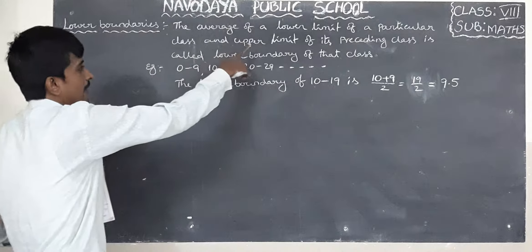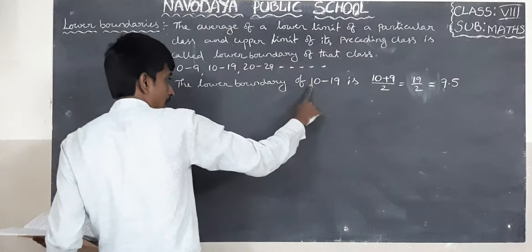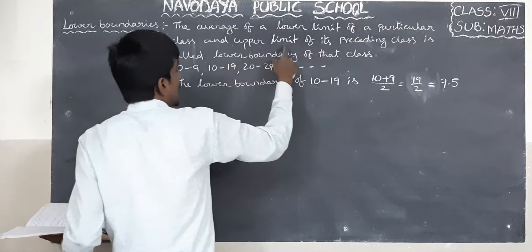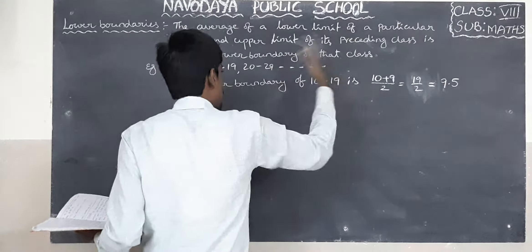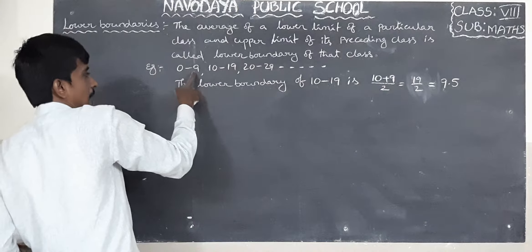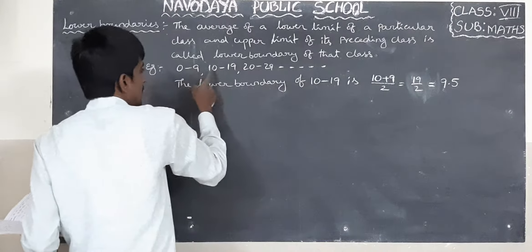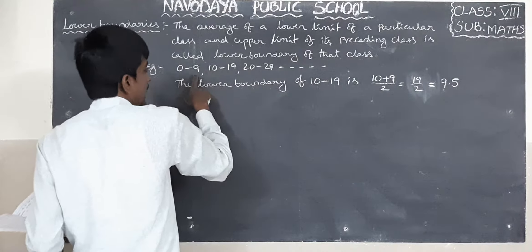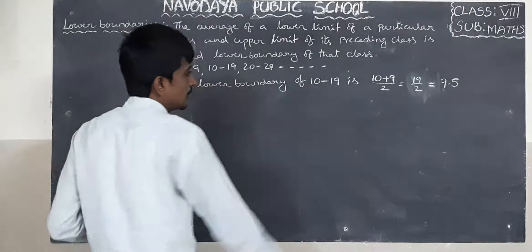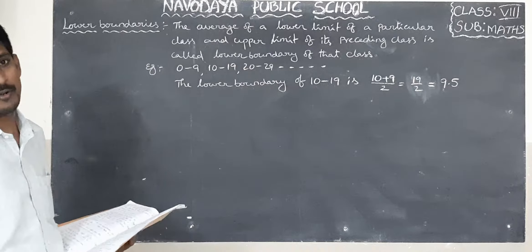The lower boundary of 10 to 19 is 9.5. The average of the lower limit of a particular class and the upper limit of its preceding class — preceding means the one before. So average of 10 and 9: 19 divided by 2 equals 9.5. This is the lower boundary.